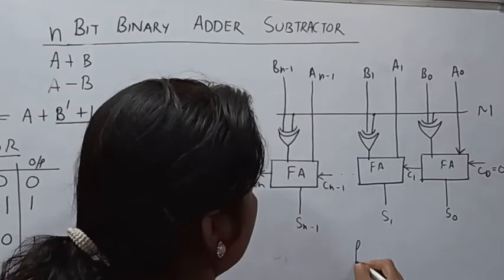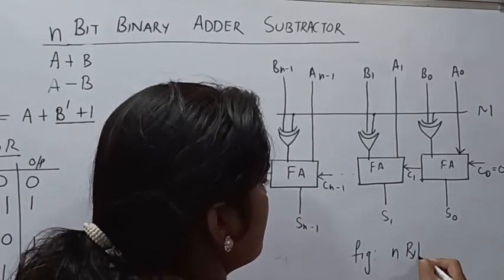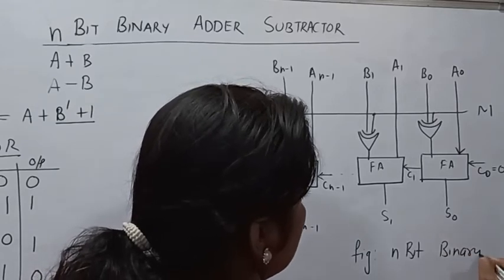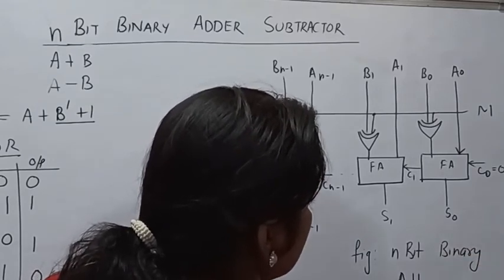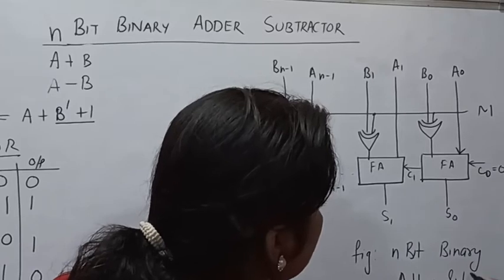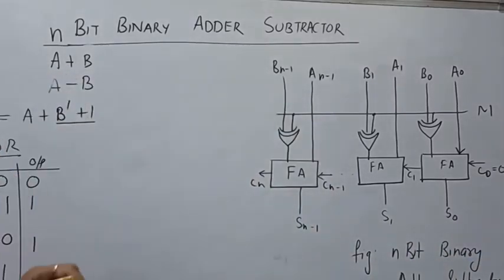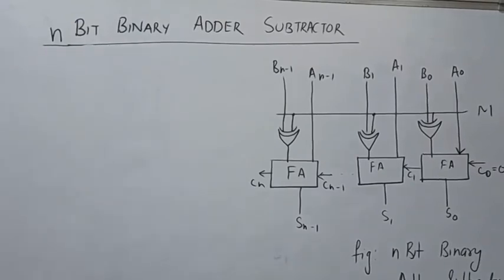This is the N-bit binary adder-subtractor in the same circuit. What is going on in this particular circuit — I am explaining to you. There are two conditions.